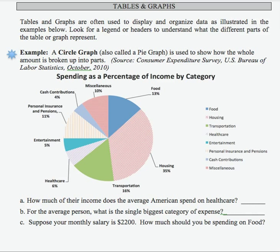In this example, we have a pie chart that represents a percentage of income by category for the average American. This pie chart was created from data taken in October of 2010, also called a circle graph. We have different categories of spending and different percentages associated with them, and we can read the information directly from the chart itself.